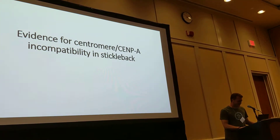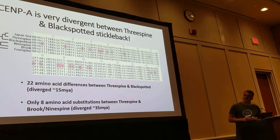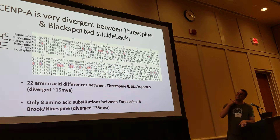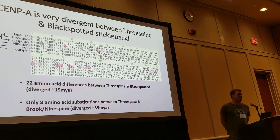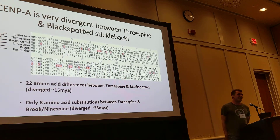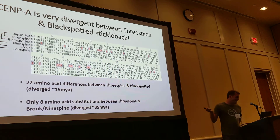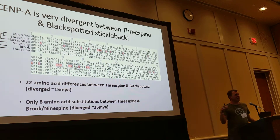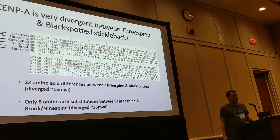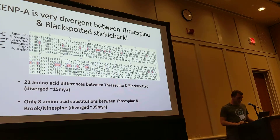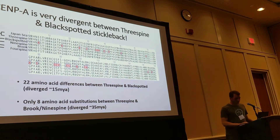So why do I think centromere drive is happening in sticklebacks? First, the CENP-A protein is very rapidly evolving. Black-spotted stickleback and three-spine are about 15 million years diverged, and there are approximately 22 amino acid differences in CENP-A. But if you go 20 million years further back to brook and nine-spine stickleback, there are only 8 amino acid changes in that CENP-A molecule. This indicates something very rapid is happening in the black-spotted lineage.